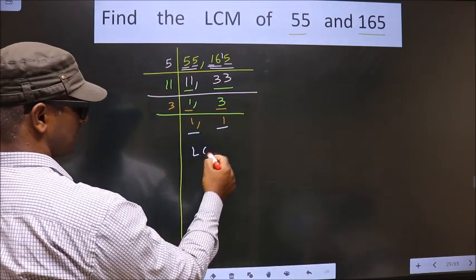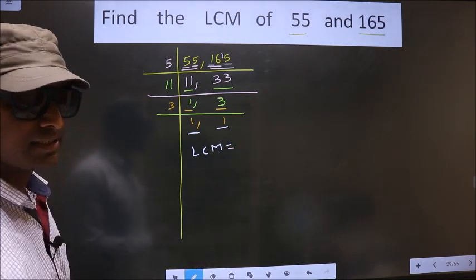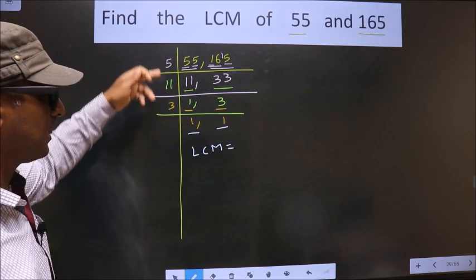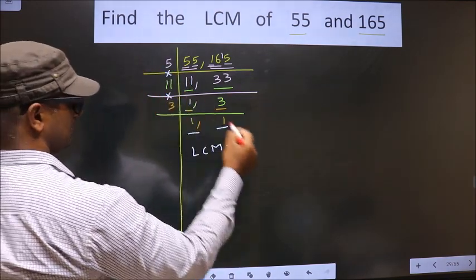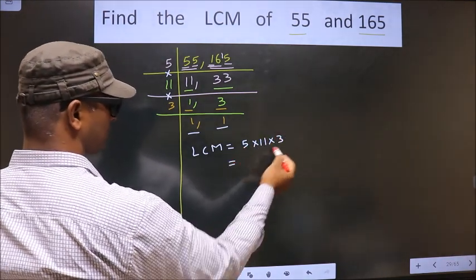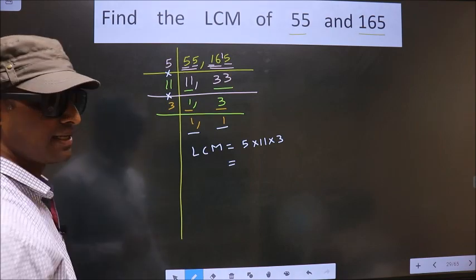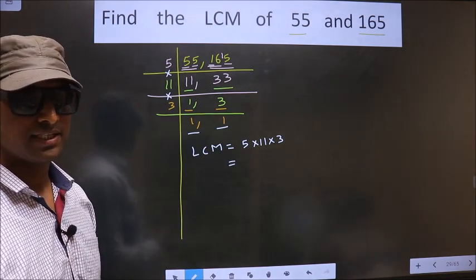Now our LCM is the product of these numbers: 5 into 11 into 3. You multiply all these numbers, and whatever number you get, that is your LCM.